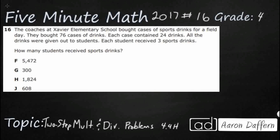So we have coaches at Xavier Elementary and they bought cases of sports drinks — 76 cases, and each case contained 24 drinks. When we have each case containing the same amount, that means we've got equal groups. And when we see equal groups, that lets us know that we are going to either multiply or divide.